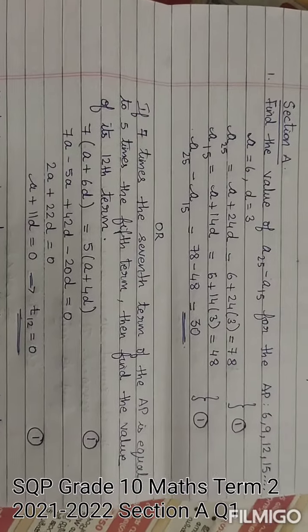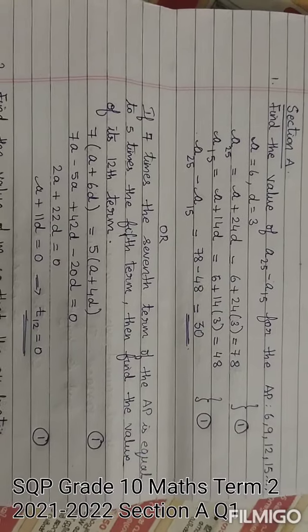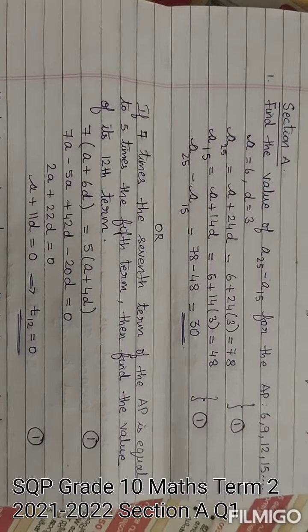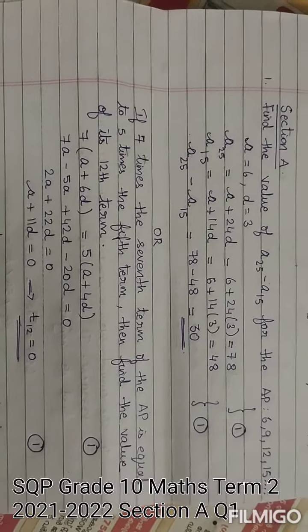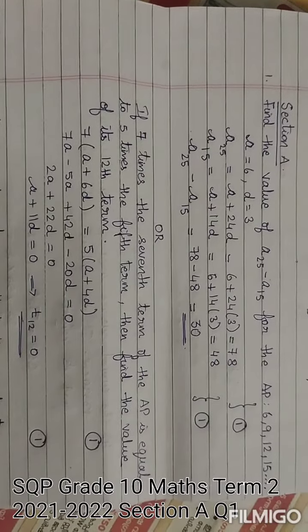Here it is given a equals 6, d equals 3, and we know A25 equals a plus 24d and A15 equals a plus 14d. It is given in the question a equals 6, d equals 3.